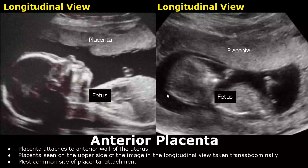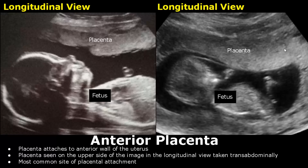An anterior placental position is the most common position. The placenta attaches to the anterior wall of the uterus. In the longitudinal view, it will be seen on the upper side of the image, taken transabdominally.